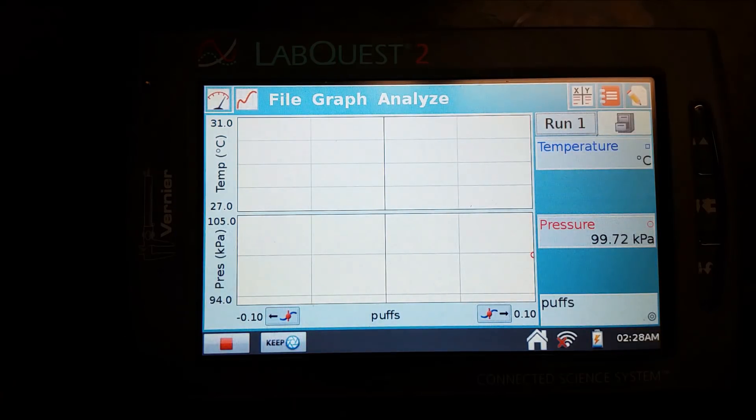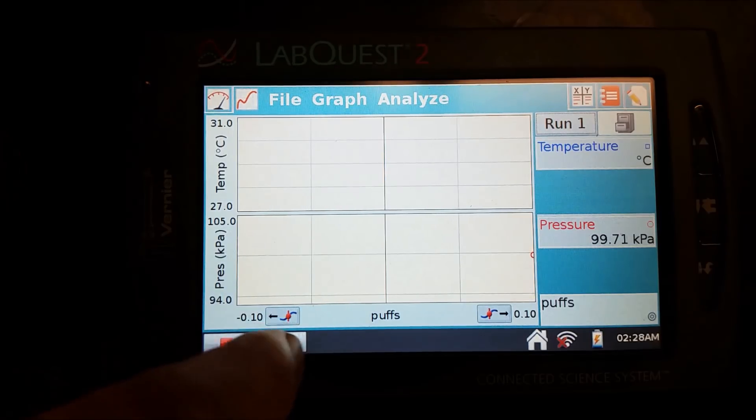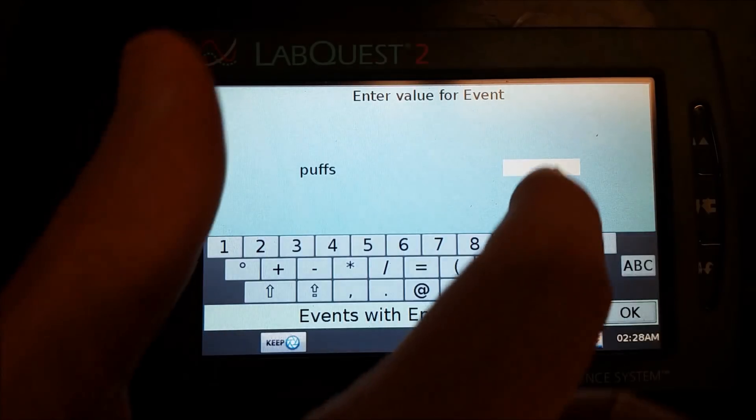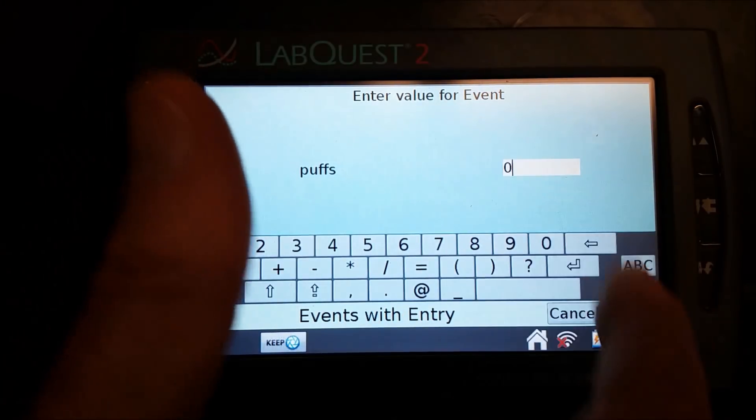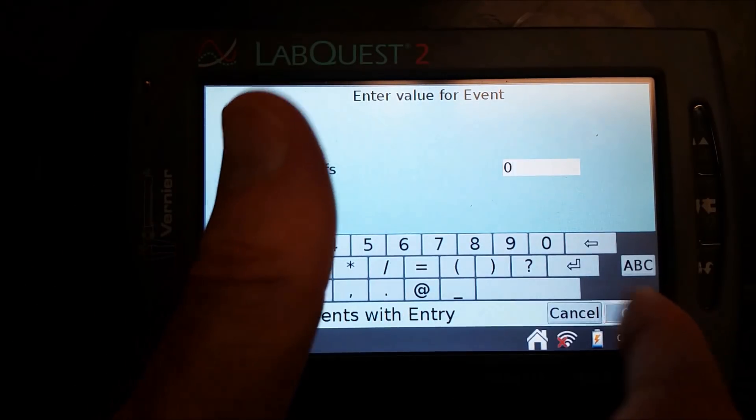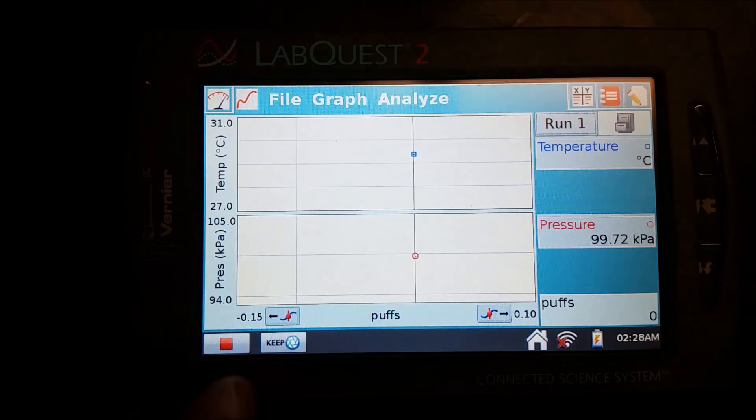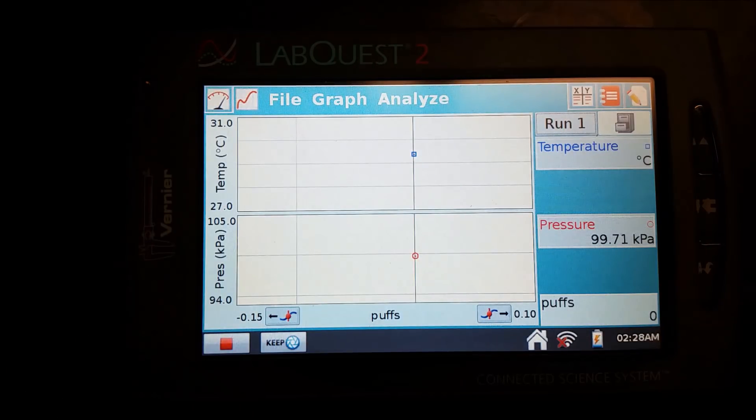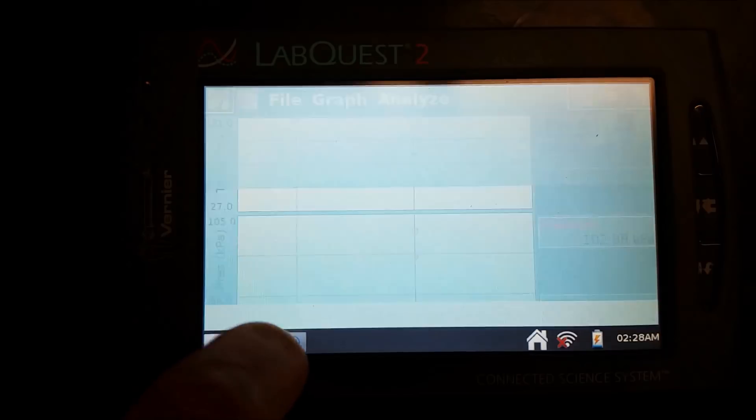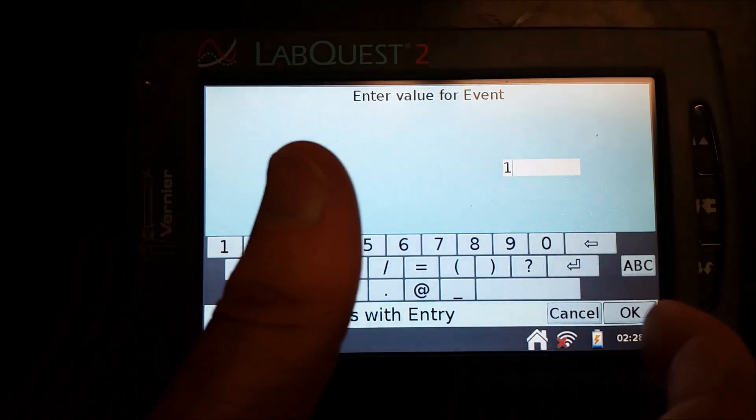Okay, so now before I put a puff of air in, I'm going to hit keep. And this is now going to record what the pressure is with no puffs added, just whatever air was in there in the first place. And now I'm going to go ahead and inject a puff of air. And I'm going to seal that. I'm going to remove the syringe. And now my pressure has changed, so I'm going to hit keep. And now I've put in one puff of air.